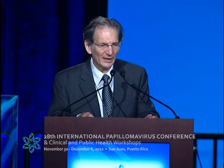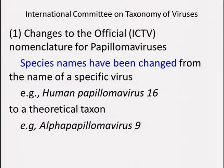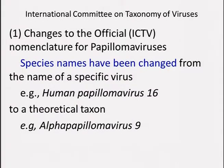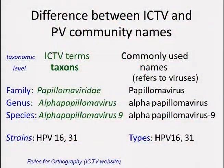Below the species level, we have authority as a community to order and name things as we see fit. The main change last year was that species names were changed from the name of the specific virus — so the species group used to be called human papillomavirus-16, now officially recognized as alpha papillomavirus-9. That's the official designation for the species group. There's also a distinction between the official ICTV nomenclature and the language we use: when referring to the theoretical taxon, use proper spelling and italicization; when referring to viruses, they can be abbreviated.